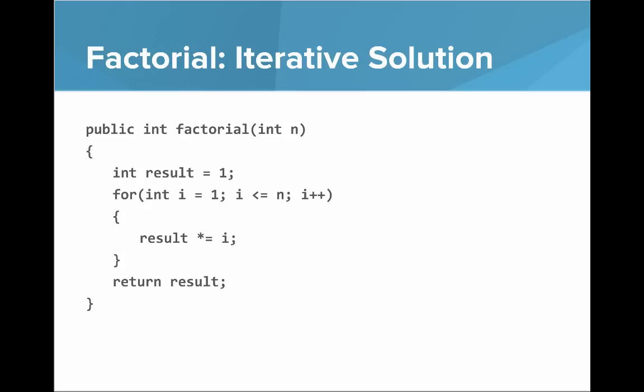So let's start with factorial and look at the iterative solution. We start with result equals one, and then for i is one up to and including n, we multiply by i. So that's how you get factorial of n. Factorial of three is three times two times one. That's factorial.